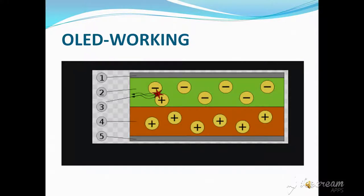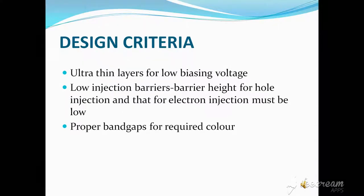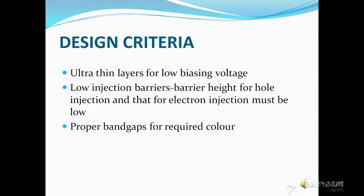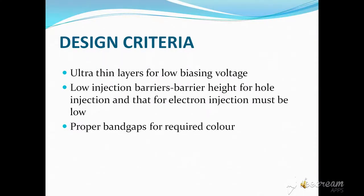Here we can see that electrons and holes combine to form light. Now looking at the design criteria: ultra-thin layers are needed for low biasing voltage, and low injection barriers — that is, the barrier height for hole injection and for electron injection must be low. Proper band gaps are required for the desired color; by using Alq3 we get green color.